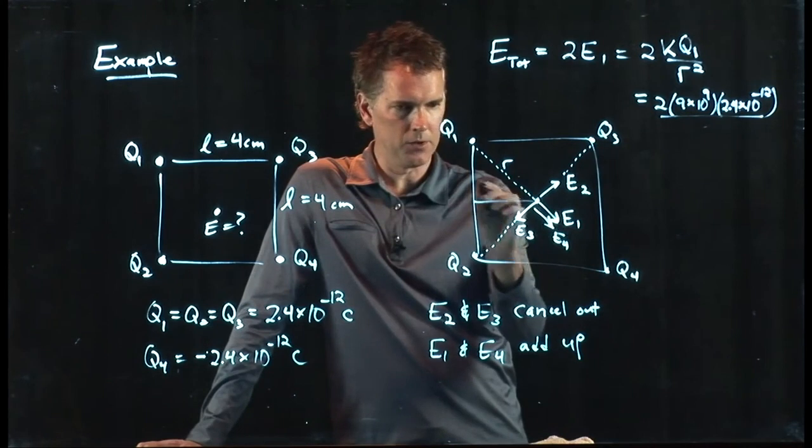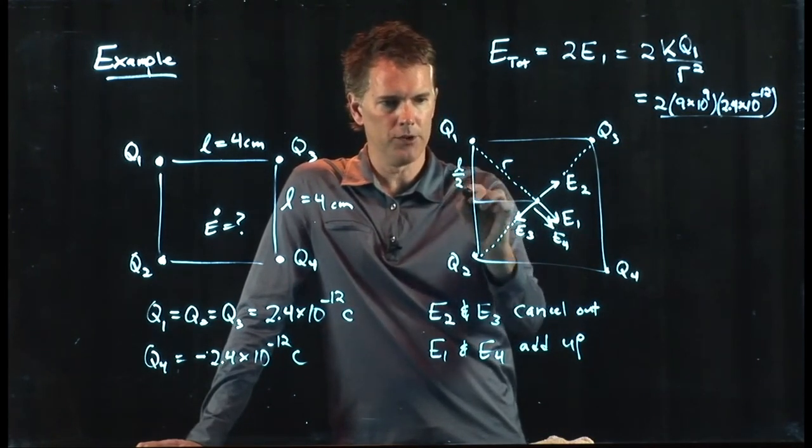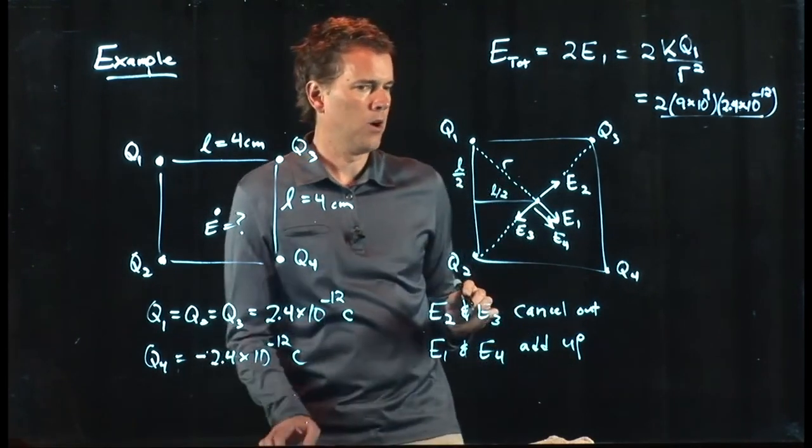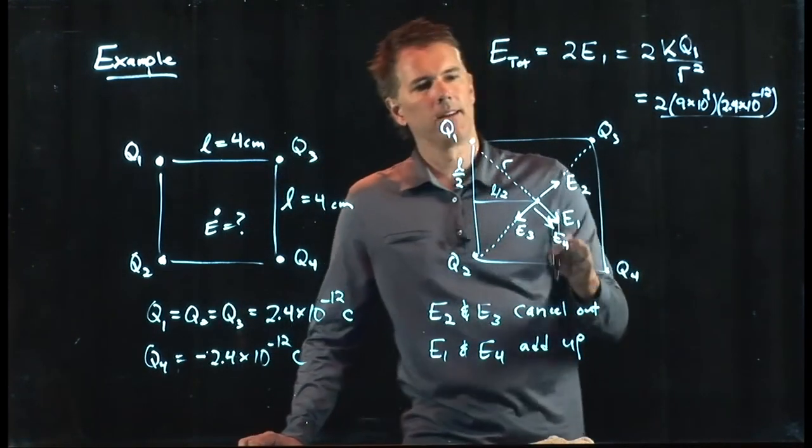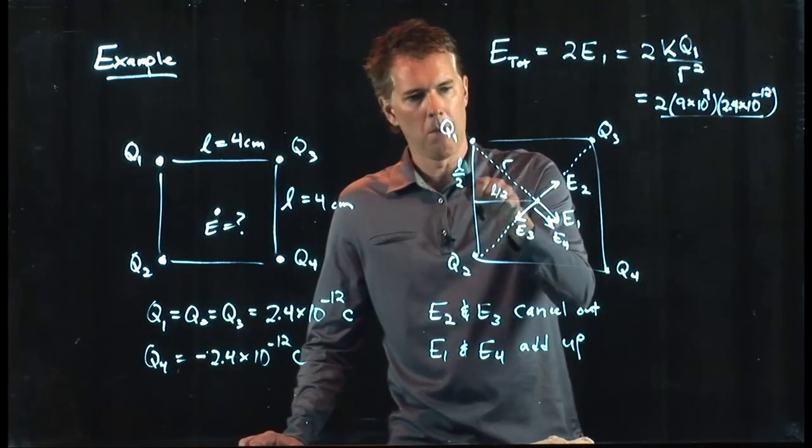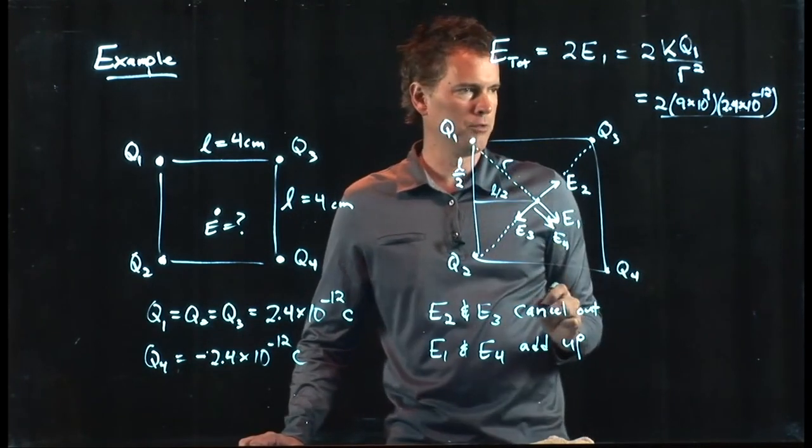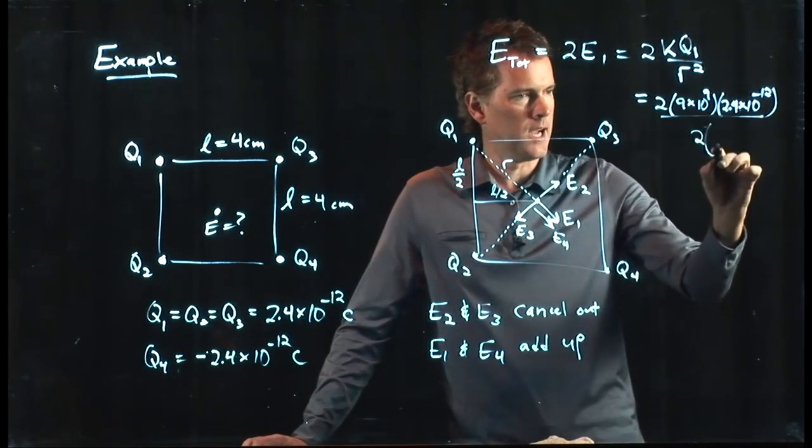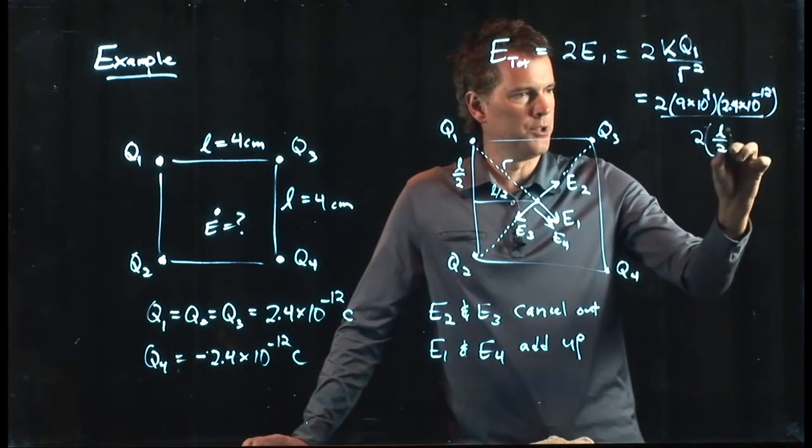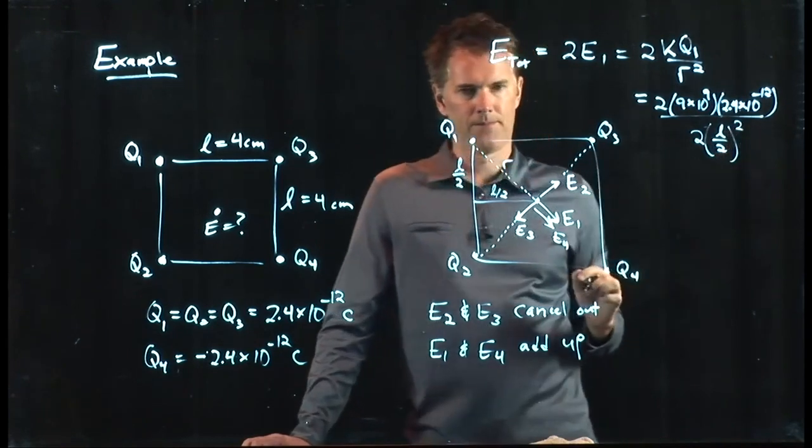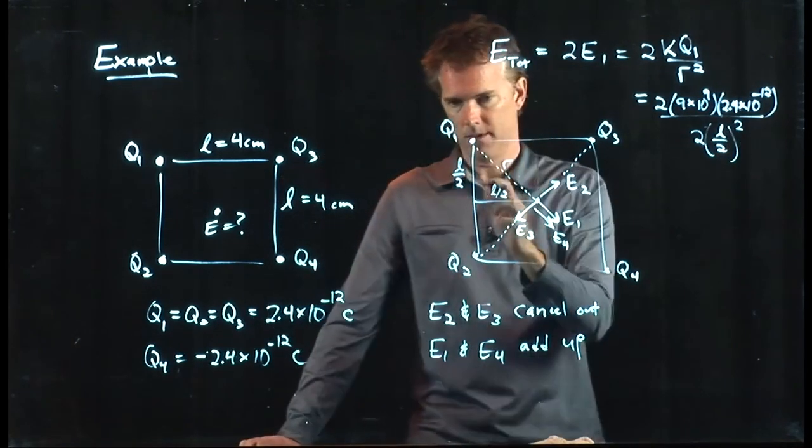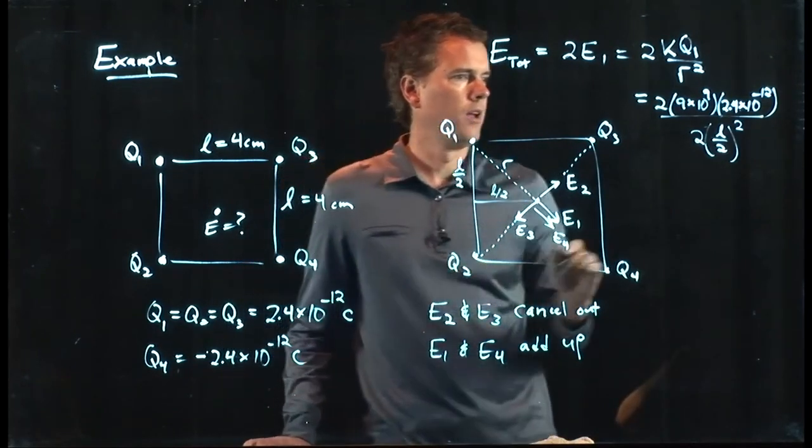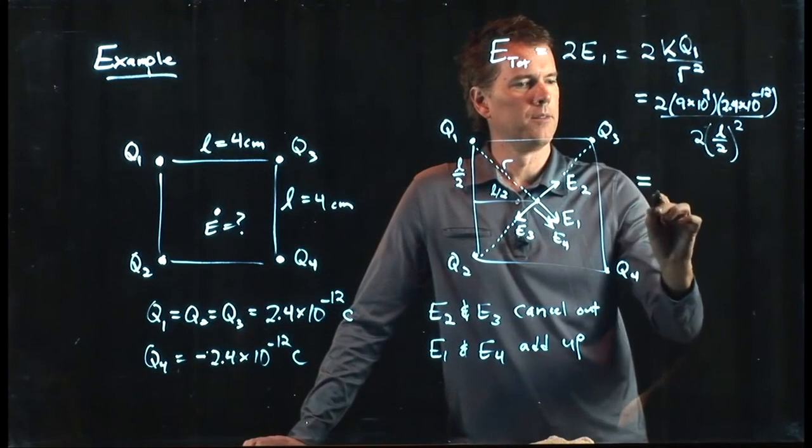This side of the triangle is in fact L over 2. That side of the triangle is also L over 2, so r squared is in fact L over 2 squared plus L over 2 squared, and so we get 2 times L over 2 squared. L over 2 squared plus L over 2 squared equals r squared, and we know that number now.